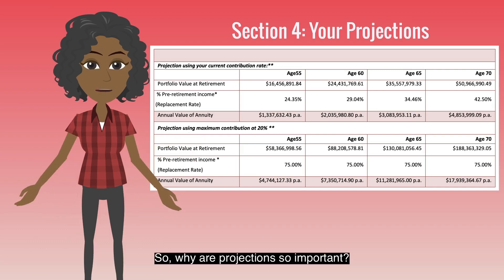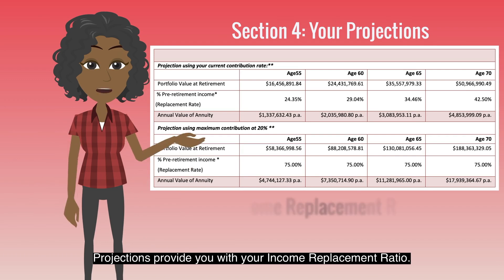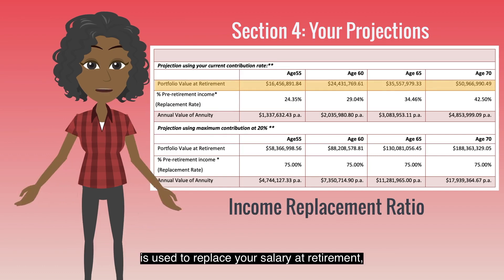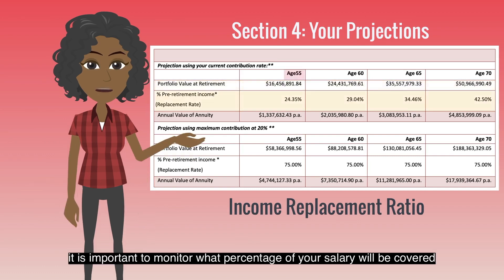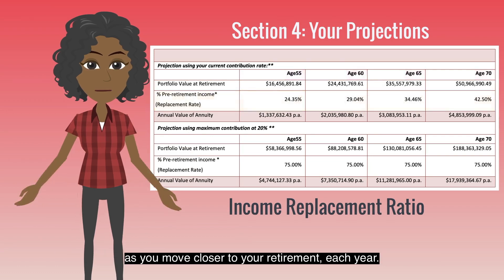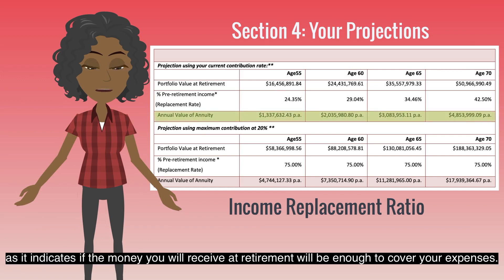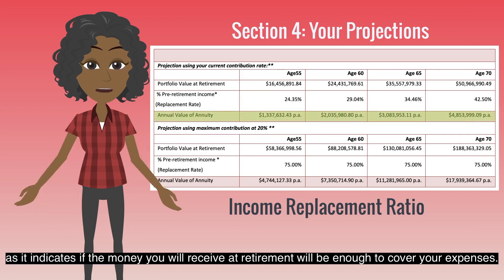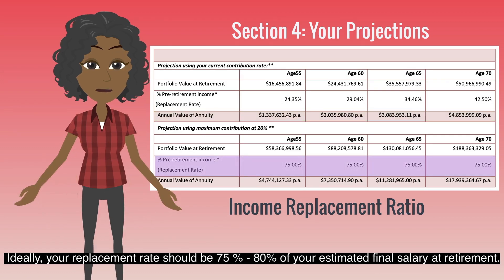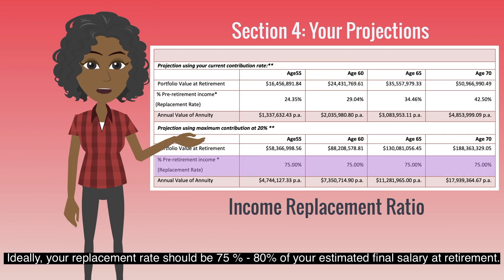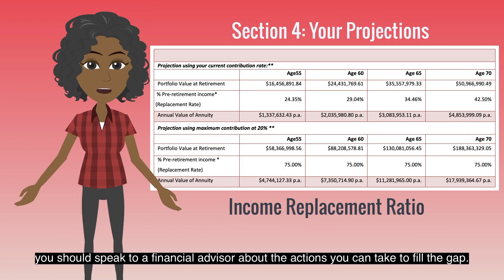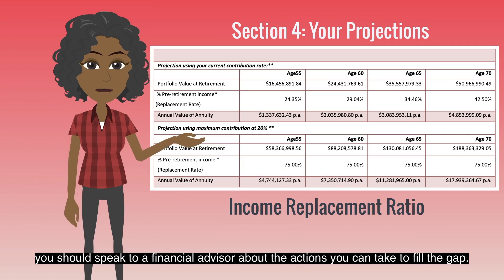So, why are projections so important? Projections provide you with your income replacement ratio. The money you will receive from your pension account is used to replace your salary at retirement. It's important to monitor what percentage of your salary will be covered as you move closer to your retirement each year. The replacement rate is important as it indicates if the money you will receive at retirement will be enough to cover your expenses. Ideally, your replacement rate should be 75% to 80% of your estimated final salary at retirement. If your replacement rate is lower, you should speak to a financial advisor about the actions you can take to fill the gap.